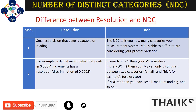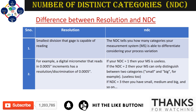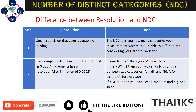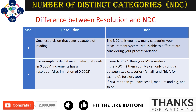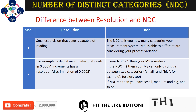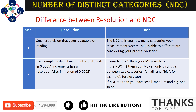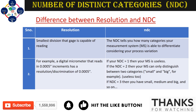An important area where people get confused is the difference between resolution and NDC. Resolution is the smallest division the gauge is capable of reading. For example, a digital micrometer can read up to 0.0005 inch increments and has a resolution of 0.0005 inch. NDC, on the other hand, refers to how many categories your measurement system is able to distinguish. If NDC is one, the MSA is useless. If NDC is two, it can only distinguish between two categories — small or big. NDC of three allows small, medium, and large. It is always preferred to have NDC greater than or equal to five, as per the AIAG manual.